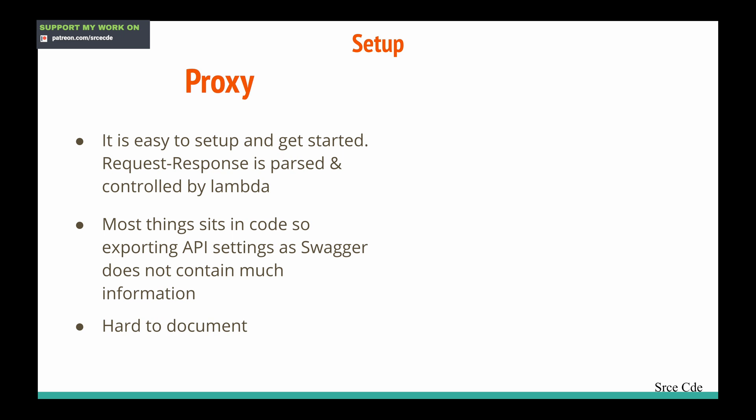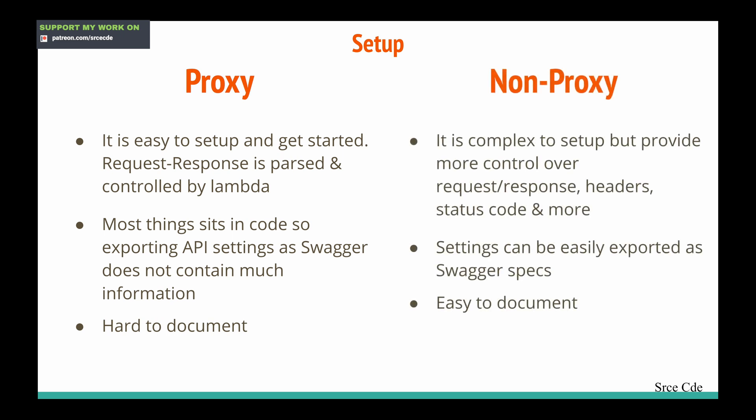Within proxy integration, everything mostly sits in the codebase — request parsing takes place at the Lambda level, and the response is configured from the backend. Nothing is being transformed or set up at the API Gateway level, so when we try to export settings as part of the Swagger specification, we won't get much information from the API Gateway. Because most things are in the code, it is basically hard to document.